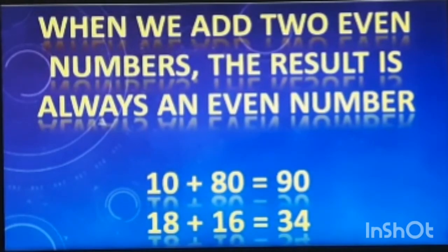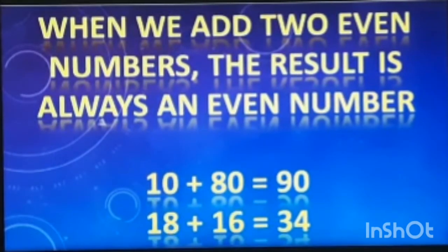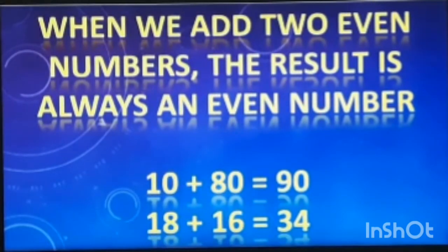18 and 16 are two even numbers. If we add them, we get 34, which is again an even number. Now let's look at the next property of even and odd numbers.